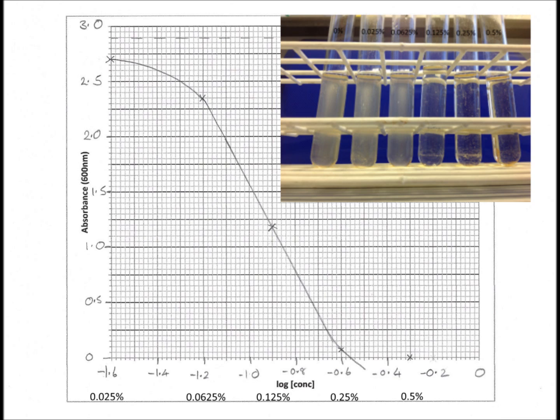We can use our graph to work out the minimum bacteriostatic concentration because that's the point where if you extend the line it will cross the x-axis. On my graph it crosses at log to the base 10 of minus 0.56, that's equivalent to a concentration of 0.275%. So the minimum bacteriostatic concentration of Chloros for E. coli in my experiment is 0.275%.